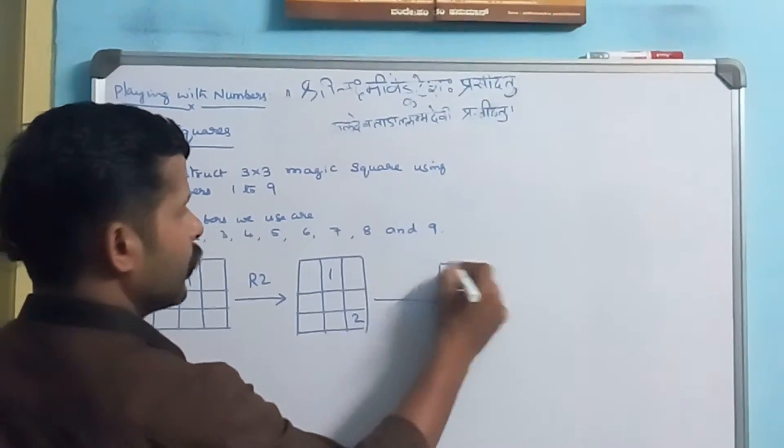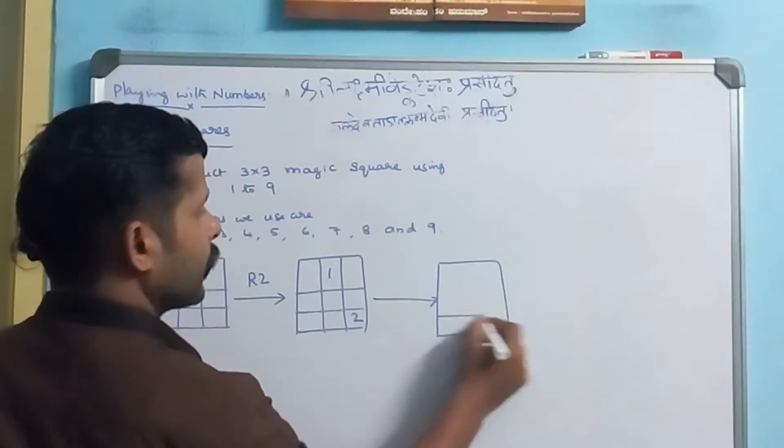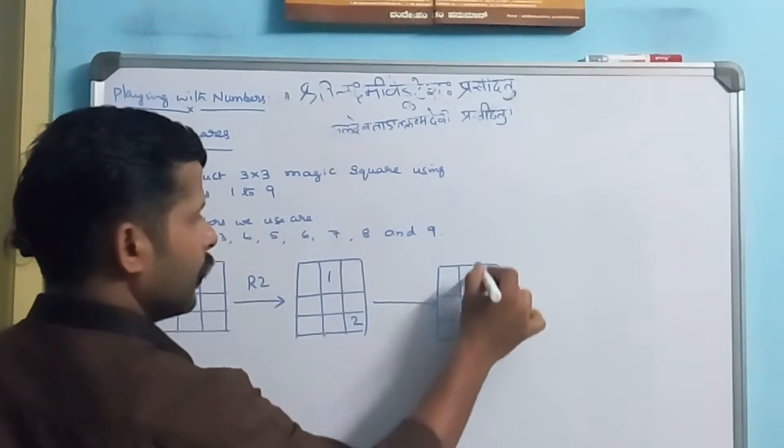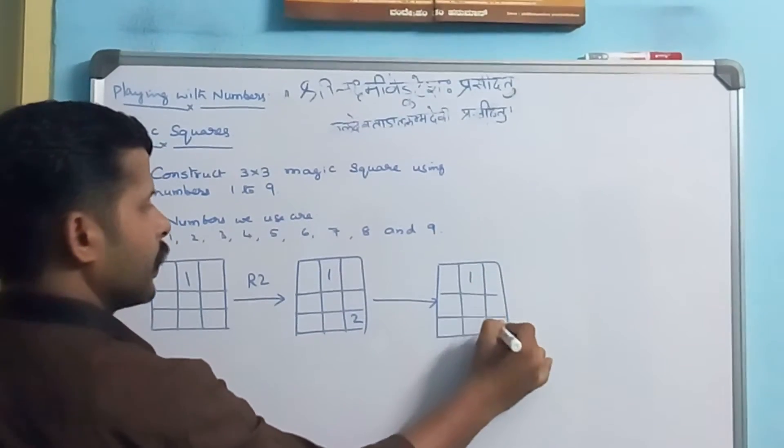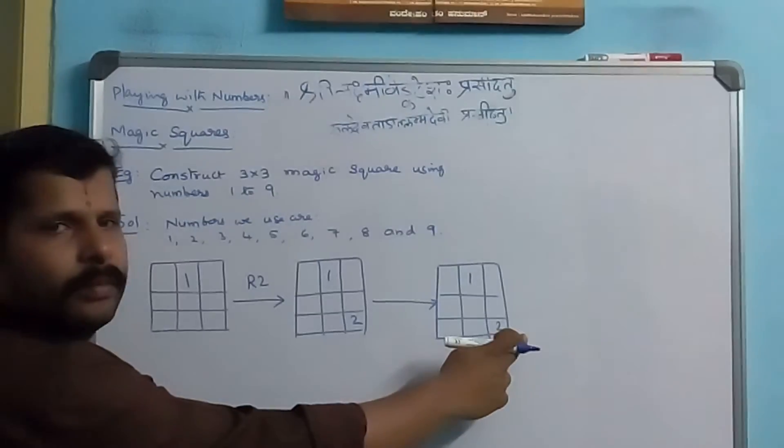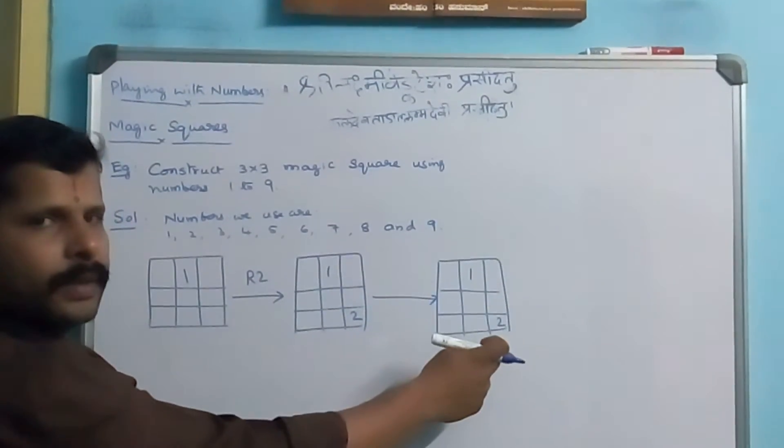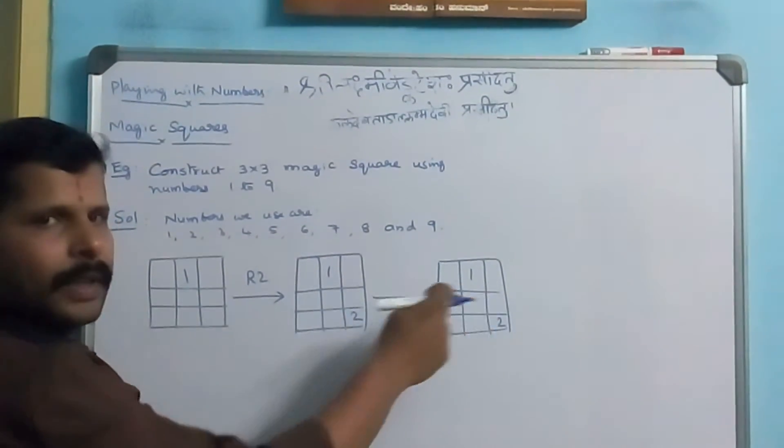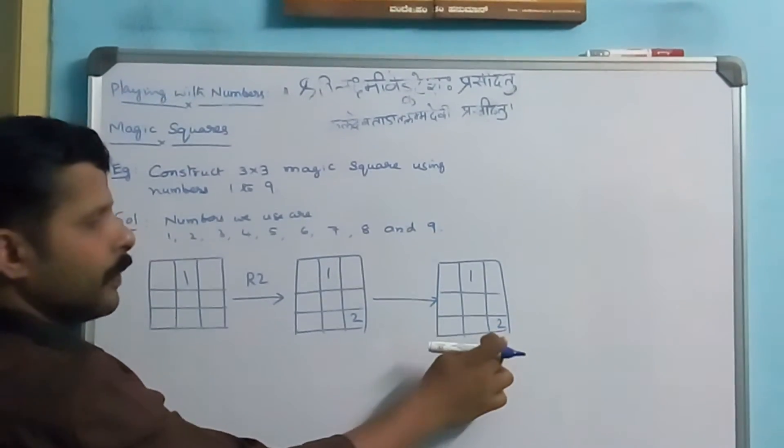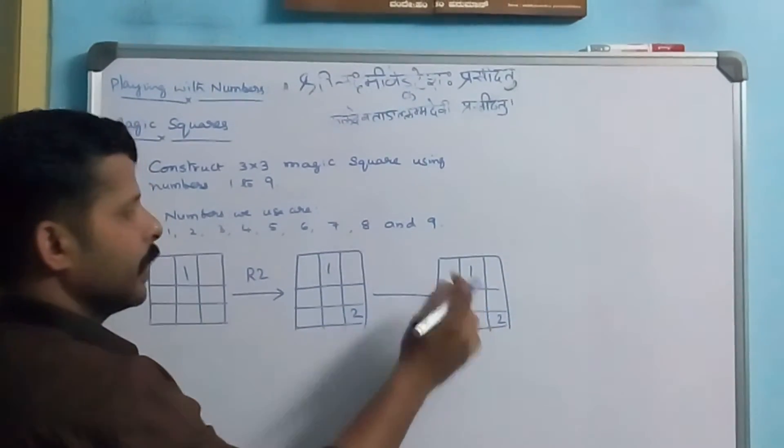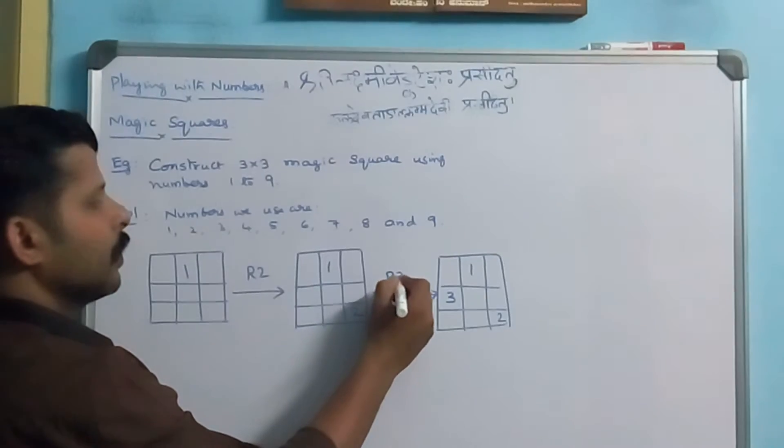On applying which rule will we be constructing this cell? 1 and 2 are existing. We don't have a next column, we don't have a next diagonal cell. So, we will go to the top of this cell, top row, leftmost cell, and fill the next number. That is 3 here, using rule 3.